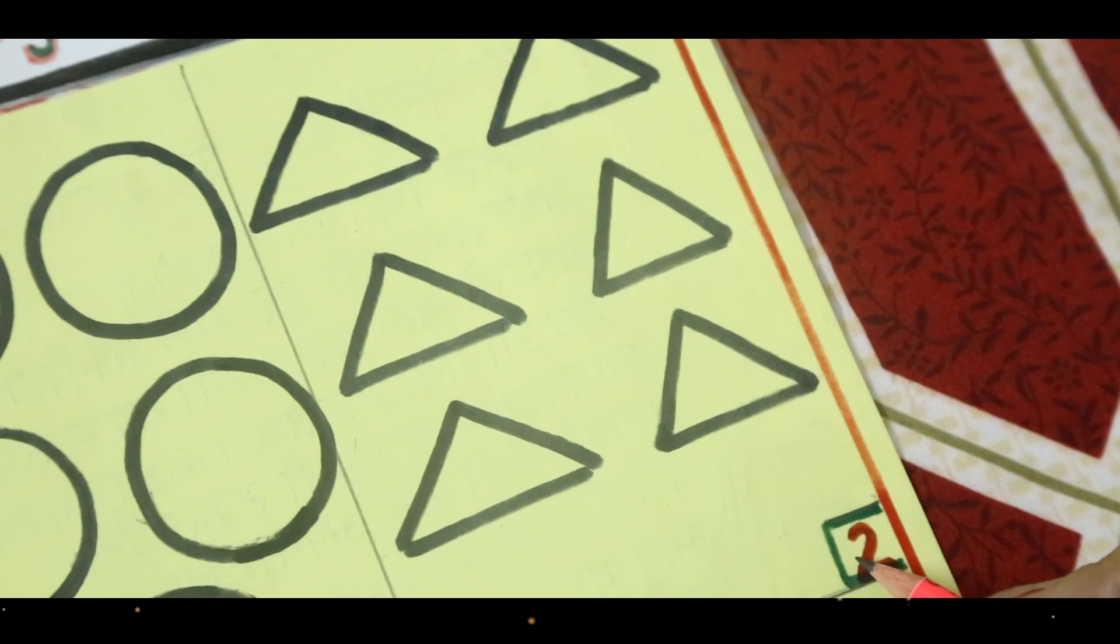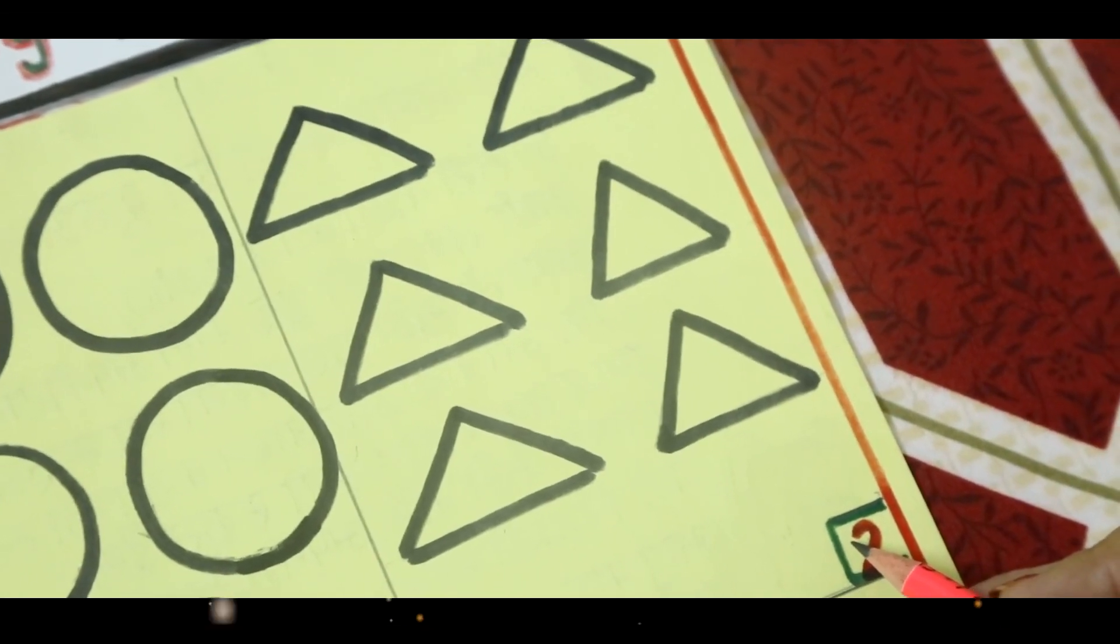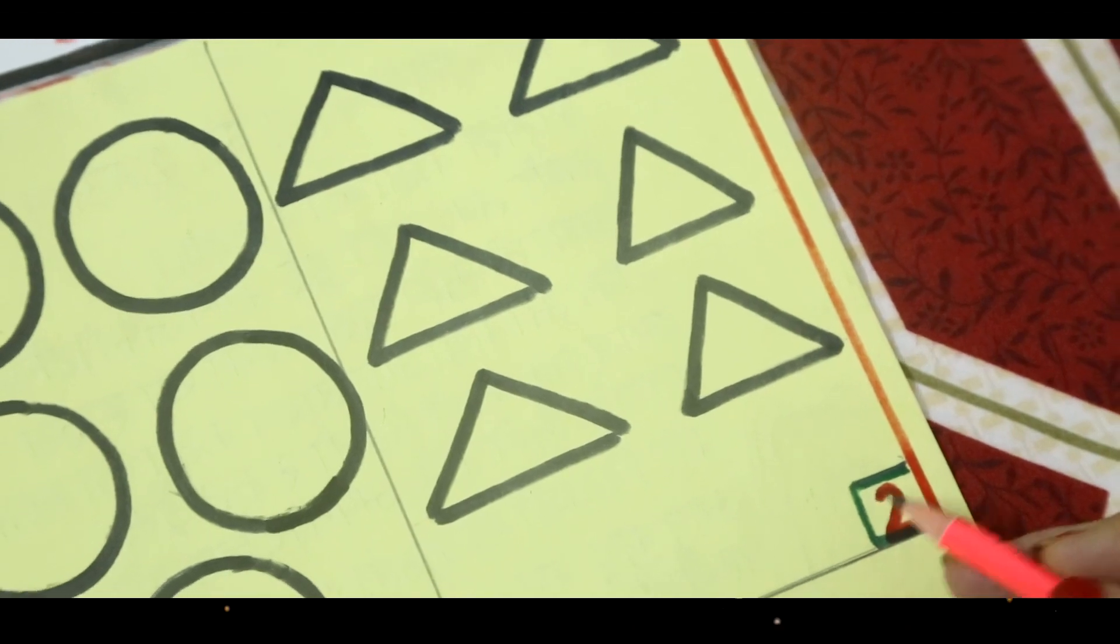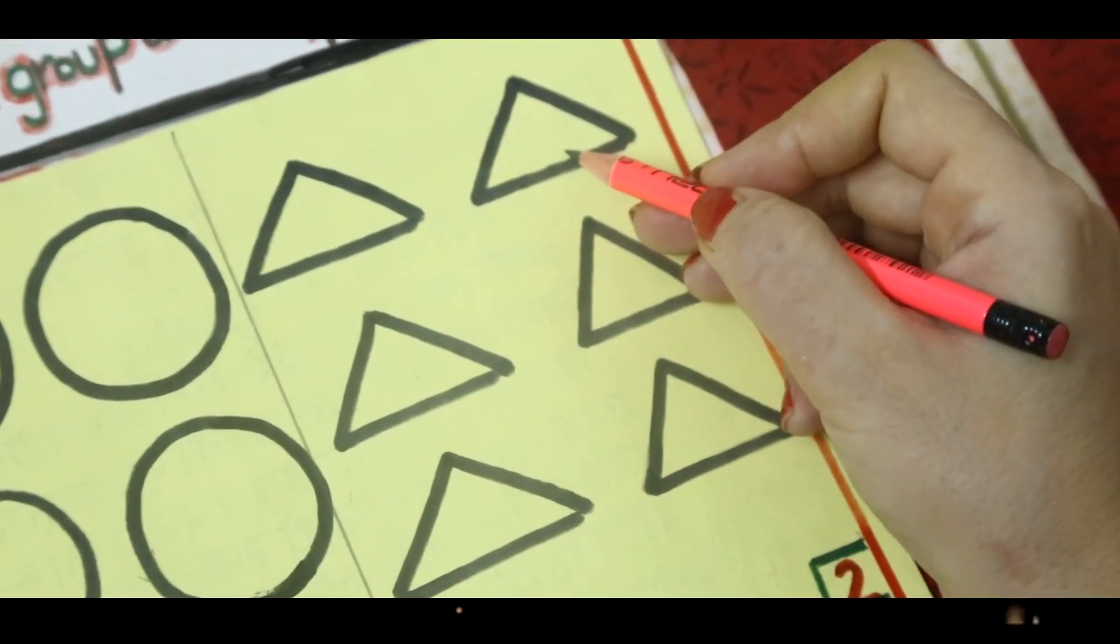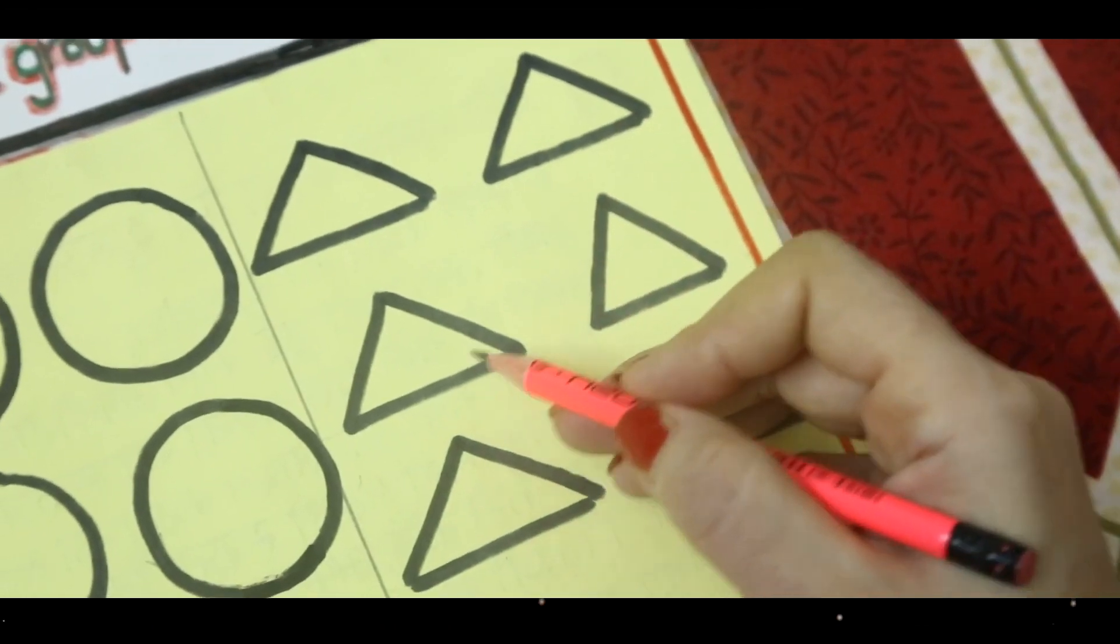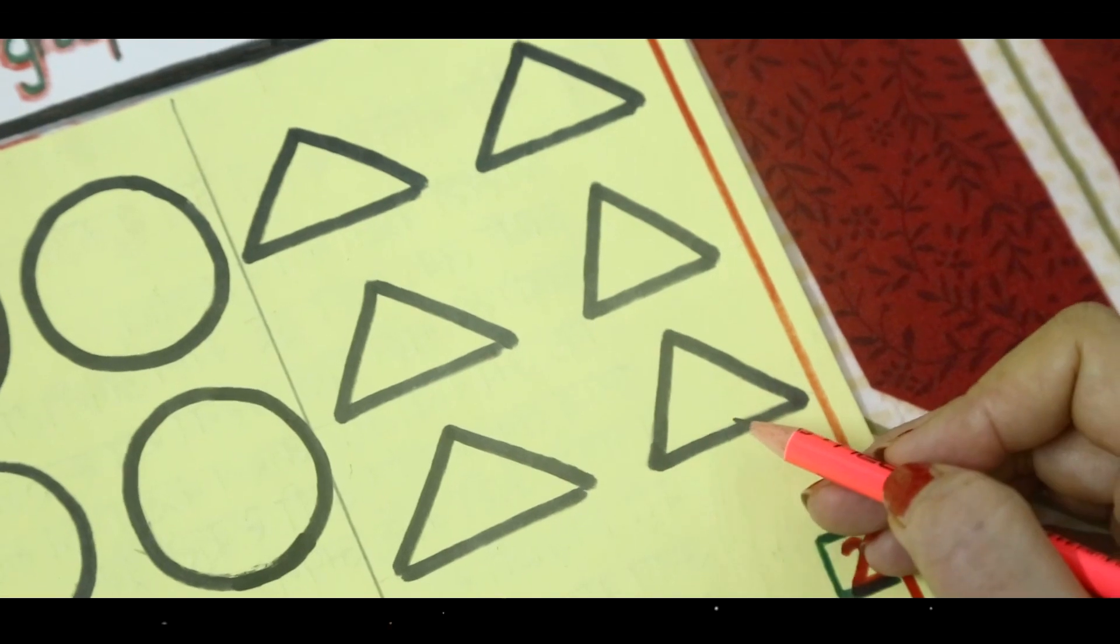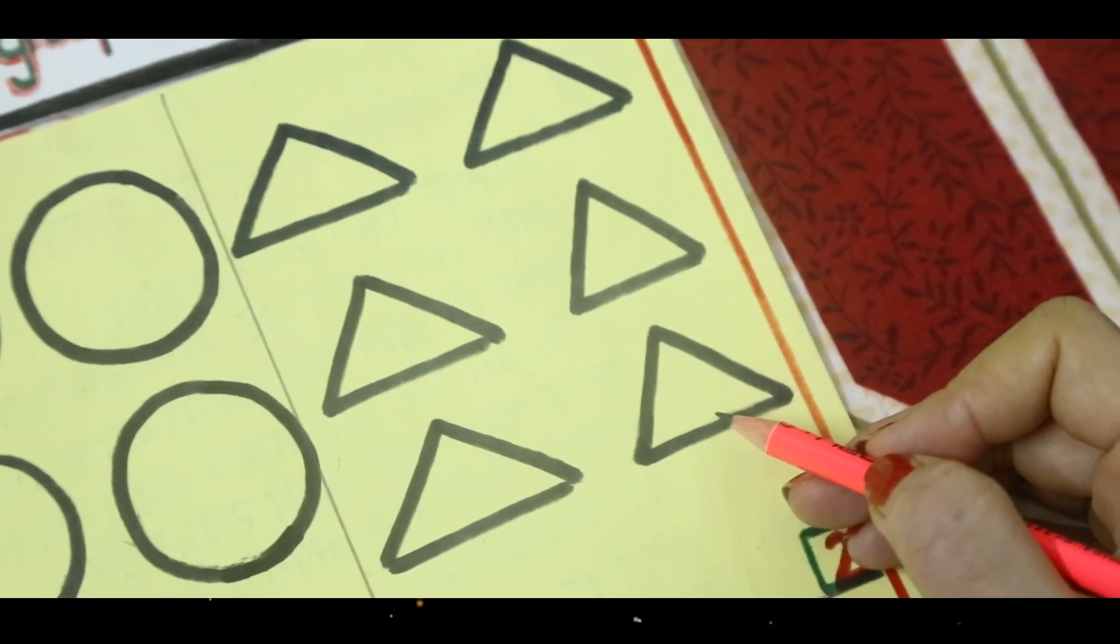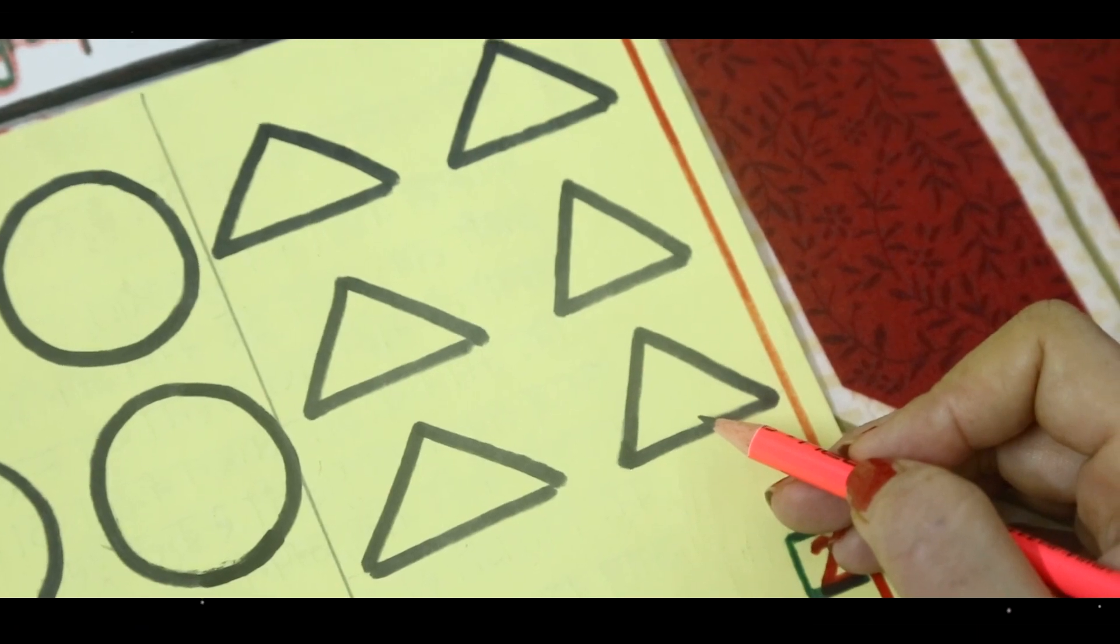In group two, we have triangles. Let's count with me how many triangles we have. One, two, three, four, five, six. Six triangles. Keep in mind that you have six triangles with you.